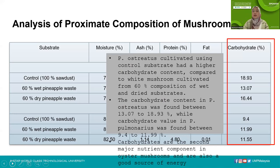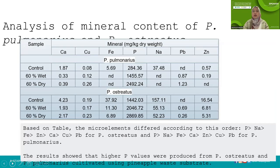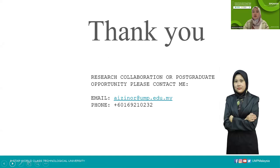For mineral content analysis, micro elements differed in order: potassium, sodium, iron, zinc, and so on. The results show that higher potassium values were produced from P. ostreatus cultivated using pineapple waste substrate. I hope I've finished everything before one hour — maybe we can go to the Q&A. If you have anything regarding research collaboration or postgraduate opportunity you can contact me. This is my email and also my phone number — you can text me or WhatsApp me later on.